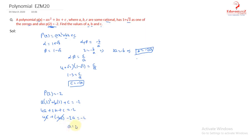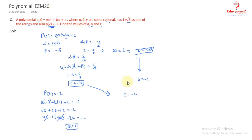From −2a = −2, we get a = 1. Substituting a = 1: b = −2(1) = −2 and c = −2(1) = −2. So the final values are a = 1, b = −2, and c = −2.